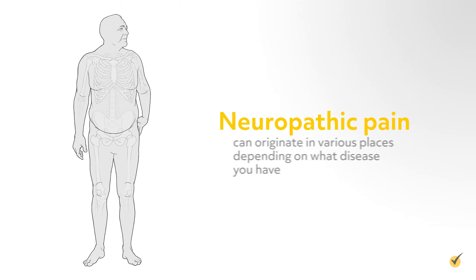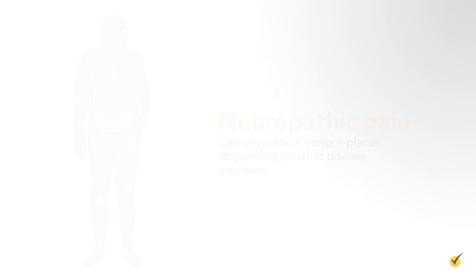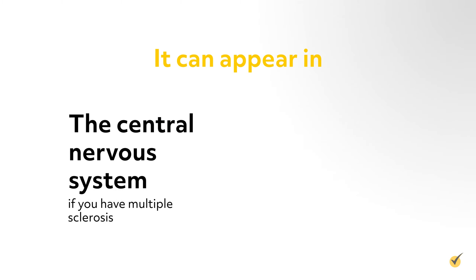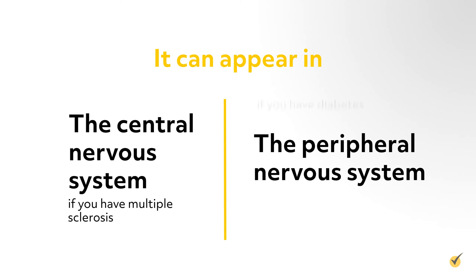Neuropathic pain can originate in various places depending on what disease you have. It can appear in the central nervous system if you have multiple sclerosis, or in the peripheral nervous system if you have diabetes.